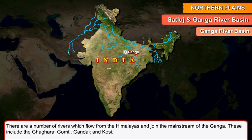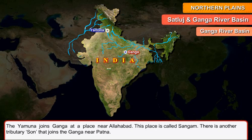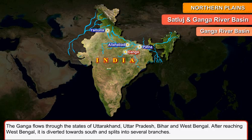These tributaries include the Ghaghra, Gomti, Gandak, and Kosi. The Yamuna joins the Ganga at a place near Allahabad, which is called Sangam. There is another tributary that joins the Ganga near Patna. The Ganga flows through the states of Uttarakhand, Uttar Pradesh, Bihar, and West Bengal.